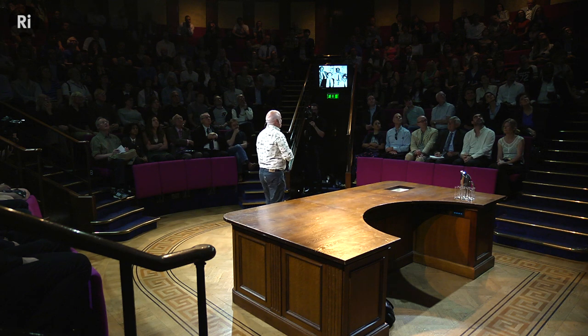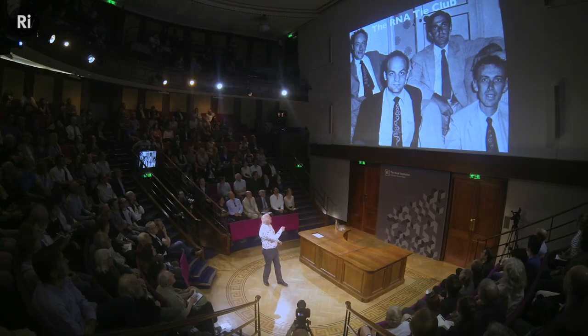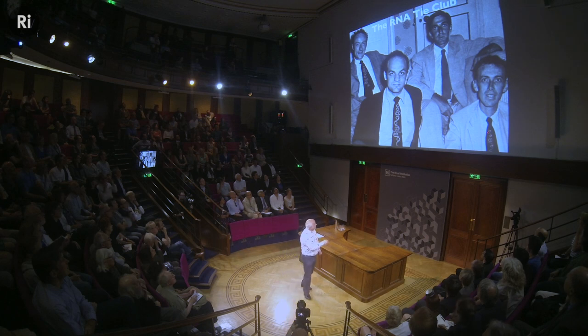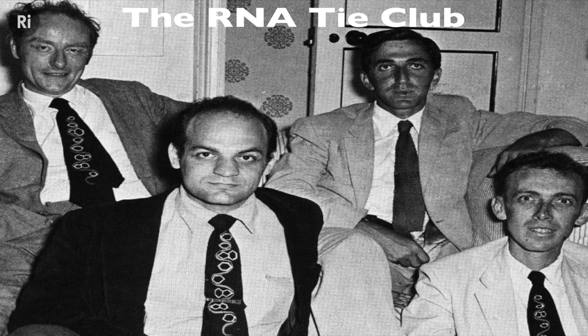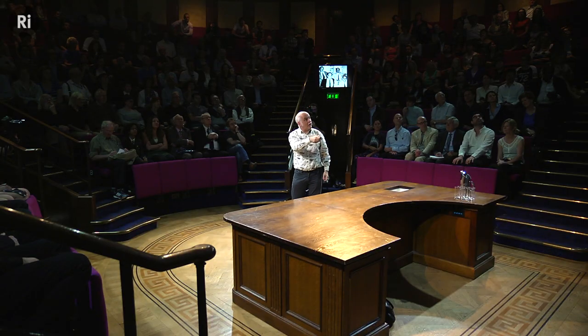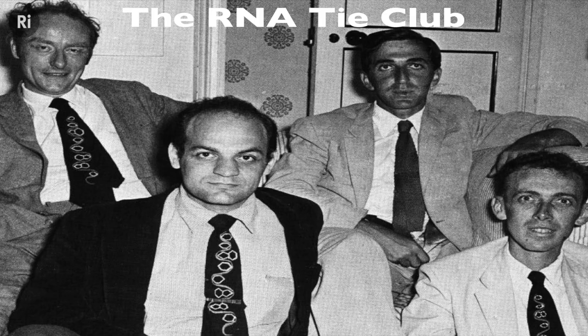They ended up creating what they called the RNA Tie Club. There were 20 members — all men, mostly mathematicians and physicists — because there are 20 naturally occurring amino acids. If DNA is coding for proteins, there must be some code for each amino acid as it's put together on a string, which was a remarkably perceptive idea. They each had an RNA tie and a tie pin with the three-letter abbreviation of their particular amino acid. We've got Crick, Leslie Orgel, Alex Rich, and Jim Watson among them. Gamow had his RNA tie on as well.